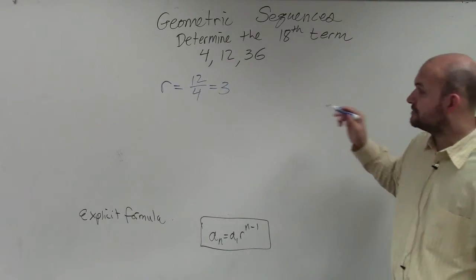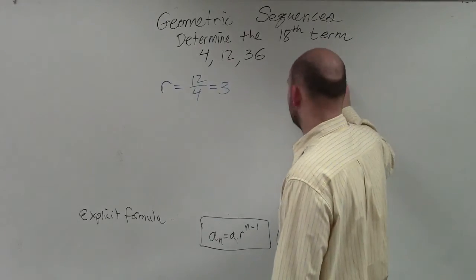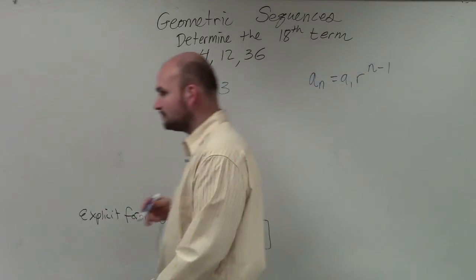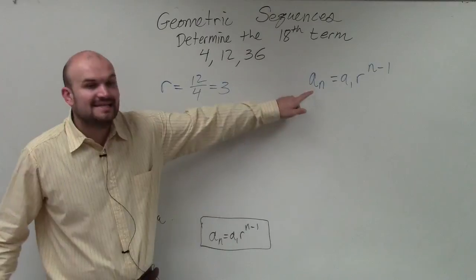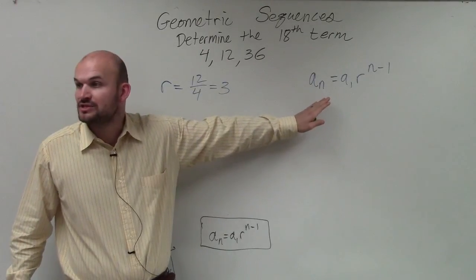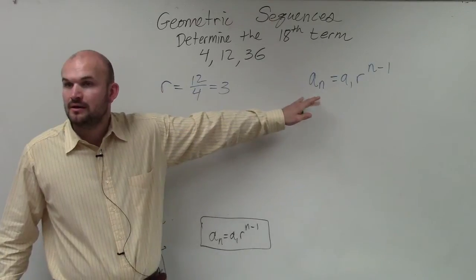Now, to determine the 18th term, I'm going to have to use the explicit formula, which is a sub n equals a sub 1 times r to the n minus 1. So a sub n represents whatever term in the sequence we're trying to figure out, which in this case is going to be 18.